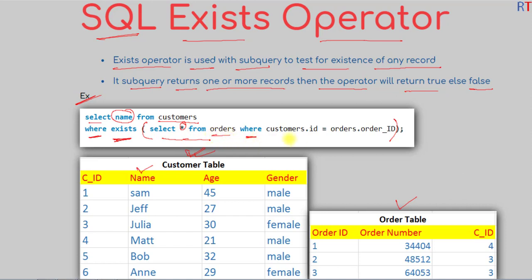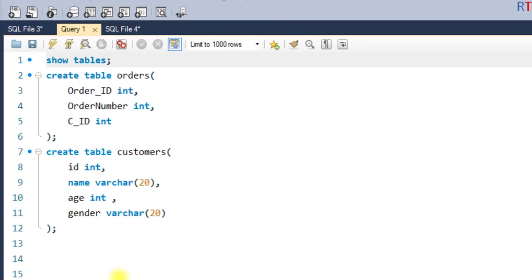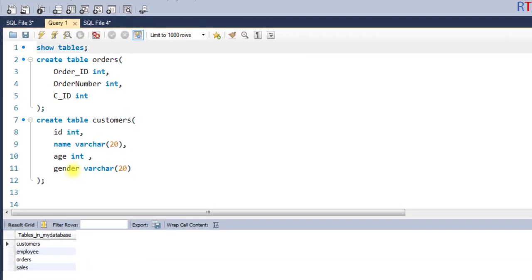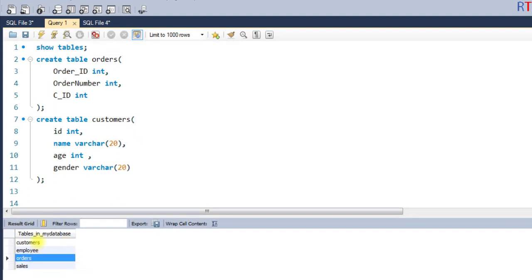The sub-query condition is where customer ID is equal to the order ID. If the customer ID equals the order ID, the EXISTS operator will return true. This query will return the name of all customers who have placed at least one order. Inside the database we have the orders table and the customers table.